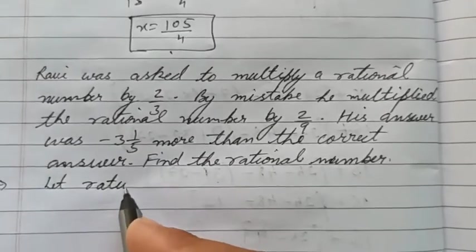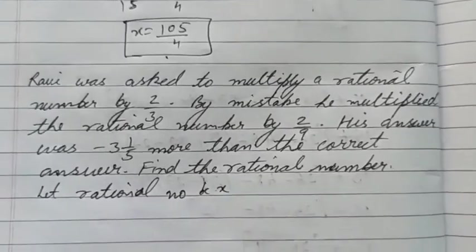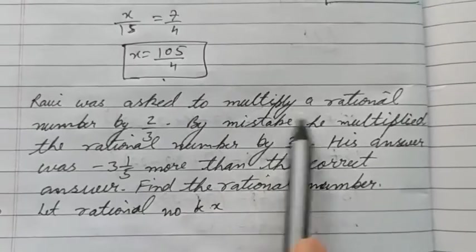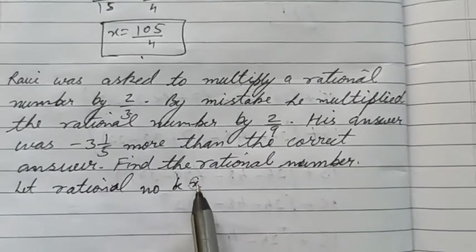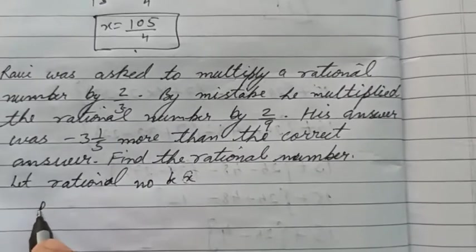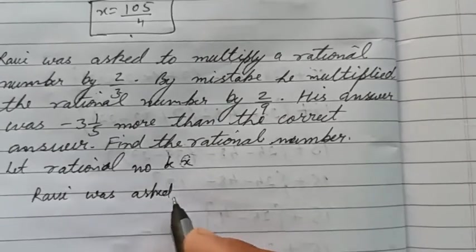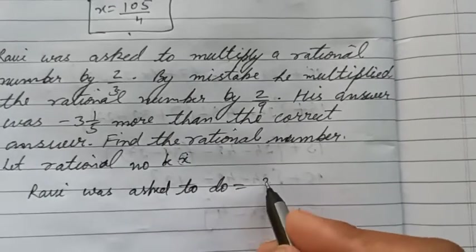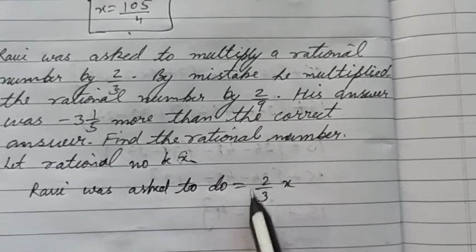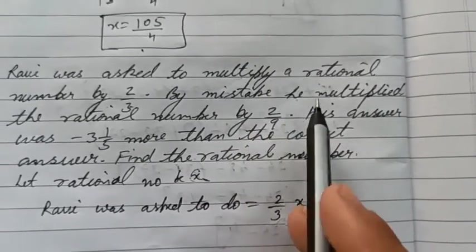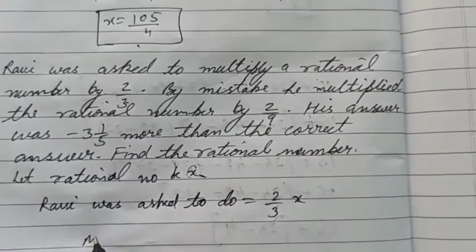Let the rational number be x. Ravi was asked to multiply the number by 2/3, so 2/3 x. Let's write what Ravi was asked to do. He was told to multiply his number with 2/3. Now by mistake he multiplied the rational number by 2/9, so the mistaken number is 2/9 x.